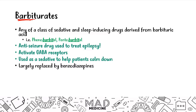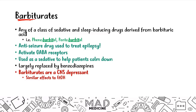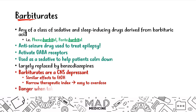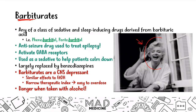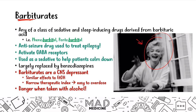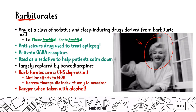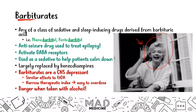Barbiturates are still something you need to know for Step 1, because you may be presented with barbiturate abuse in your classic USMLE vignettes. Barbiturates are also a CNS depressant — similar in effect to alcohol. There is a very narrow therapeutic index, so it's very easy to overdose and very dangerous when taken with alcohol. That's what led to the death of Marilyn Monroe, who overdosed on barbiturates, likely combined with alcohol.